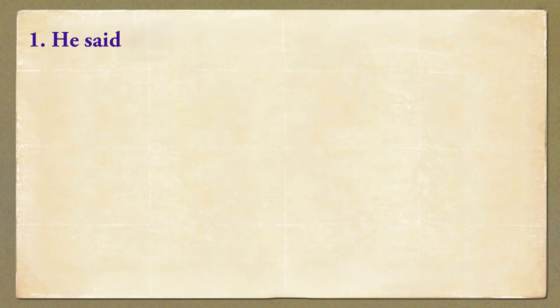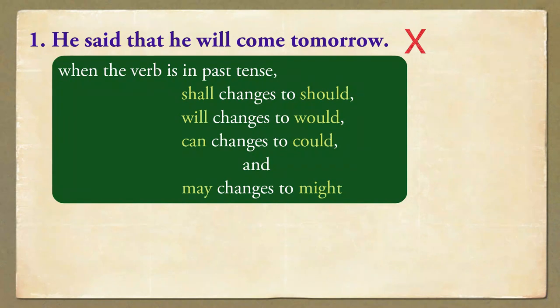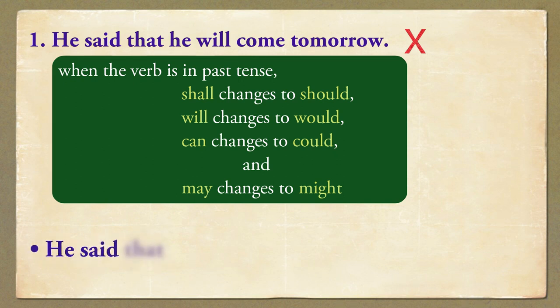He said that he will come tomorrow. Please note: when the verb is in past tense, 'shall' changes to 'should', 'will' changes to 'would', 'can' changes to 'could', and 'may' changes to 'might'. Now please repeat the correct sentence after me: He said that he would come tomorrow.